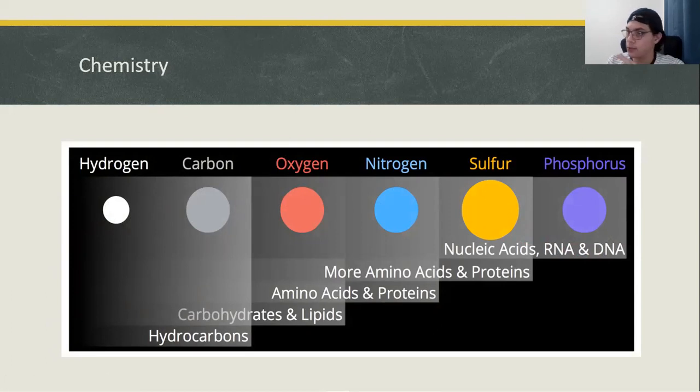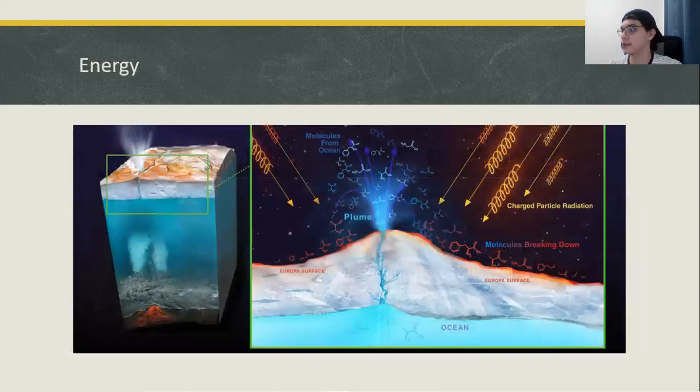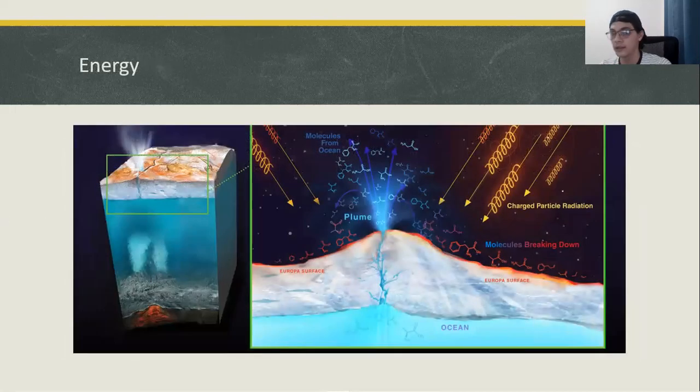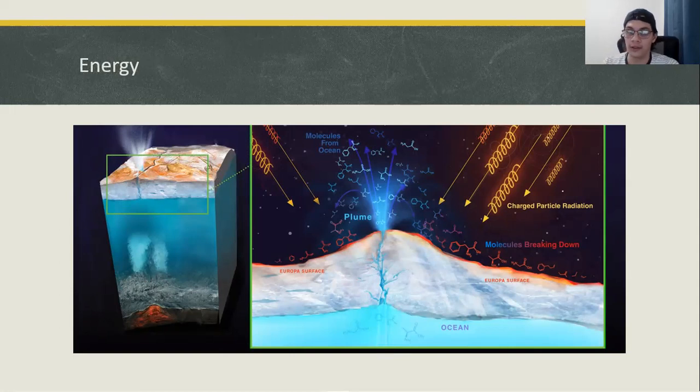So if there's water and the right chemical elements on Europa, then the only thing that remains is an energy source. We already said that Europa doesn't have volcanic activity, so they're lacking in that department. Life forms need energy to survive. And how would an icy moon so far from the sun get the energy to sustain life? Well, unlike most of the life on Earth, Europa's life may not be powered by photosynthesis. It actually may be powered by chemical reactions.